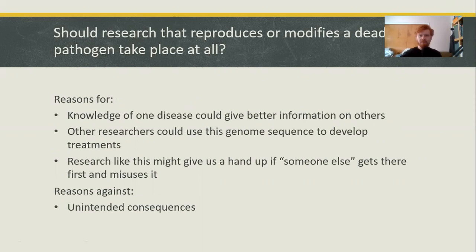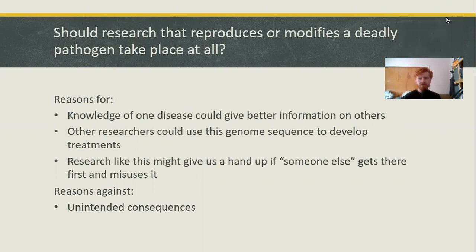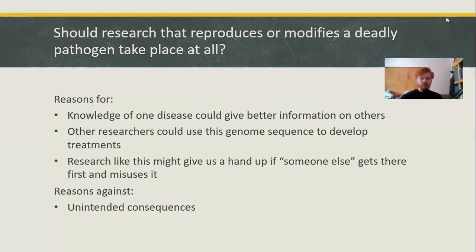Should research that reproduces or modifies a deadly pathogen take place at all? There are reasons for it. One reason is that knowledge of one disease could give better information on others. One of the most promising pieces of COVID vaccine research came out of a vaccine being developed for SARS — viruses that are directly related, and the research was able to jump from one to the other. What about other researchers using this genome sequence to develop treatments? Just because you're publishing information on something dangerous doesn't mean it's going to be used dangerously.